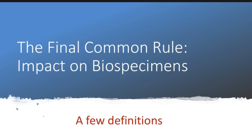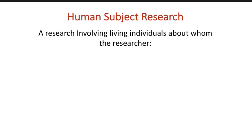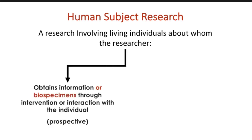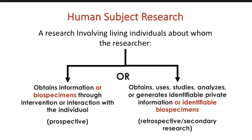First, let me give a few definitions. What is considered human subject research? This is research involving living individuals about whom the researcher obtains information or biospecimens through intervention or interaction with the individual. This is usually prospective research, or the researcher obtains, uses, studies, analyzes, or generates identifiable private information or identifiable biospecimens. This is usually retrospective research or secondary research.